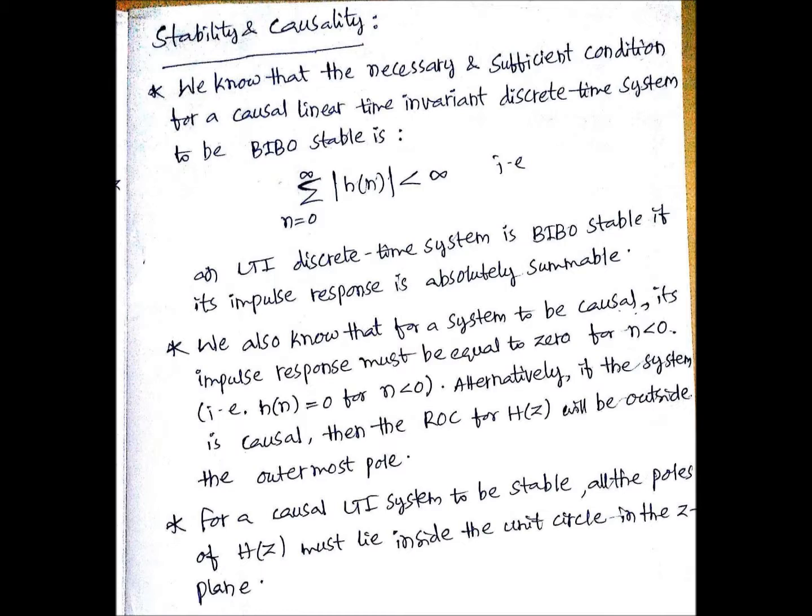An LTI discrete time system is BIBO stable if its impulse response is absolutely summable. This impulse response is nothing but the inverse Z transform of the system function, that is h(z).